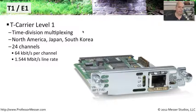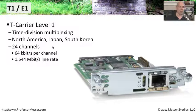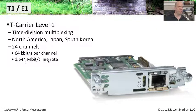This is a standard that you often see in North America, in Japan, and in South Korea. Inside of it there are 24 separate channels. This T1 line runs at a 1.544 megabit per second line rate, with those 24 separate channels within it.